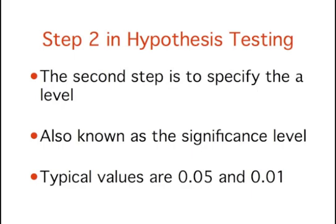The second step is to specify the alpha level, which is also known as the significance level. Typical values are 0.05 and 0.01.